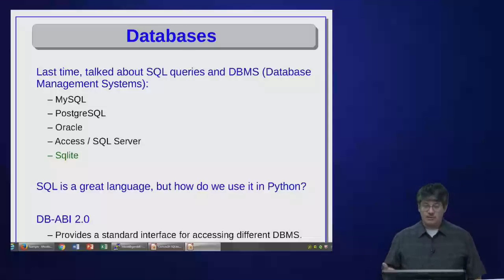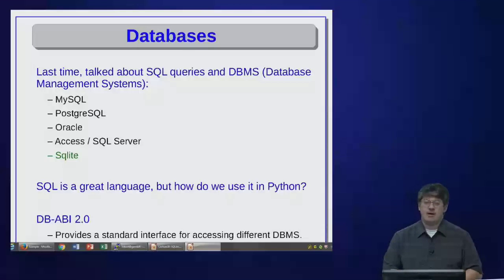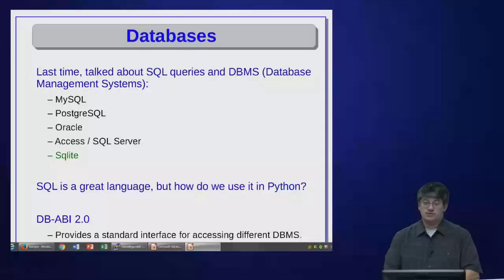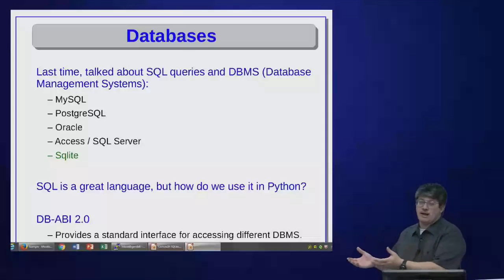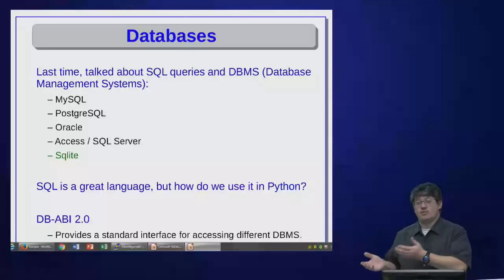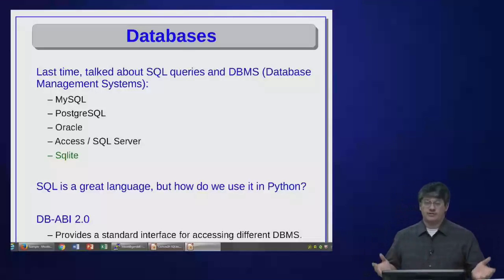SQL is a great language, but how can we use it from Python? The answer is to use something called DB-API 2.0. It's a standard that the Python community came up with. It allows us to access a database in a standard way no matter what database management system is running in the back end. So whether I'm using MySQL or Postgres, the interface looks roughly the same. We'll talk later about getting even more abstraction through a different library.